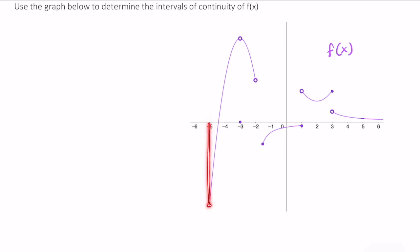At negative 5, it looks like f of x is defined, so our first interval of continuity goes from negative 5. And then if you notice here at negative 3, we have this hole and we jump down to this value. So we're no longer continuous when we hit negative 3.